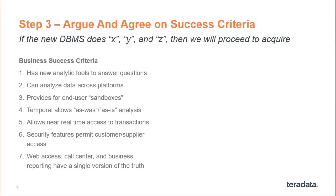Some examples of business success criteria: the new DBMS may have analytic tools to answer questions you can't do today, or allow you to analyze data across platforms that aren't currently integrated. It may provide end-user sandboxes where users can upload their own data and join it to production data, or have temporal capabilities to answer questions about how a customer was categorized in the past. It may allow for real-time access to transactions, have security features that open up data access to customers and suppliers, and provide web access, call center access, and business reporting all on a single platform — a single version of the truth.